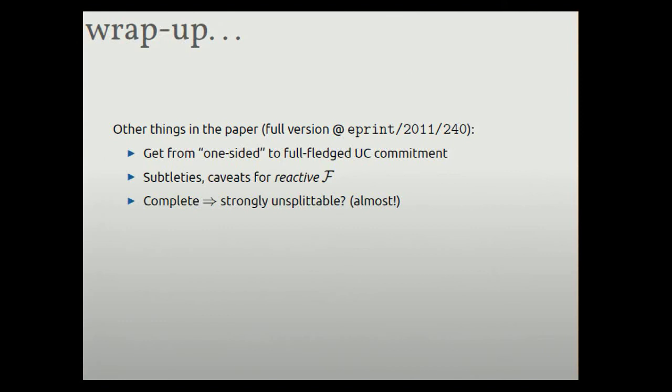So finally, if you take anything away, this is my one sentence summary of the results. So every natural functionality, so I say that if a functionality doesn't have a winning strategy for either player in this game, then it's unnatural. And you can look at the paper for all the weird ways that you can not have a winning strategy in this game. Everything else I claim is natural. And all of those are either useless or complete. So think of that picture with red and blue and a little tiny fuzzy area. And I think that's not too far from the truth. That's a safe way to think about it. So that concludes my talk. Thanks for your attention.